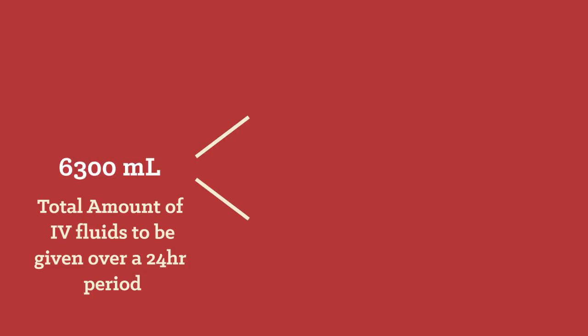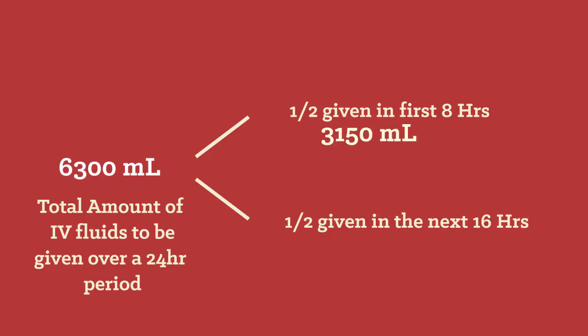Half of which is given in the first 8 hours and the other half in the next 16 hours. So, half of 6.3 liters will give us 3.15 liters of IV fluids, which will be given in the first 8 hours. The rest of the 3.15 liters should be given over the next 16 hours.